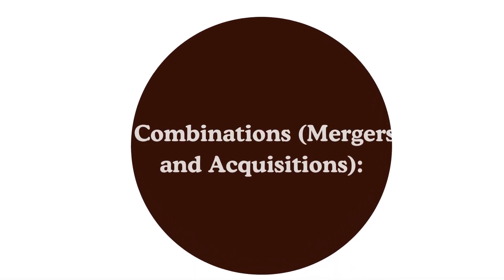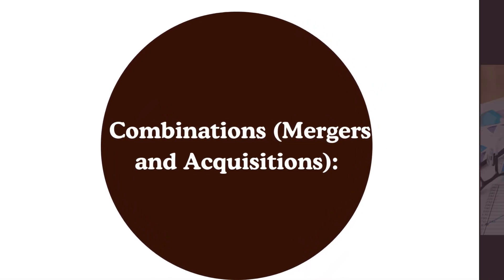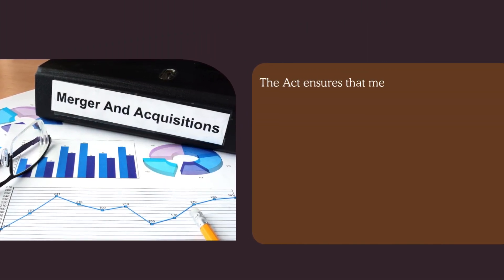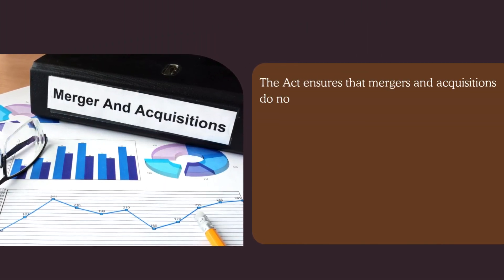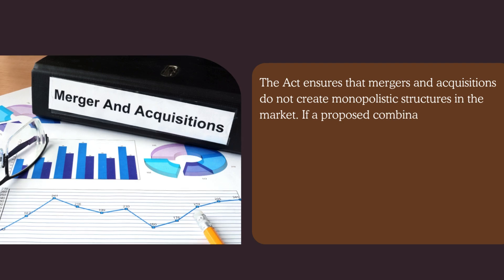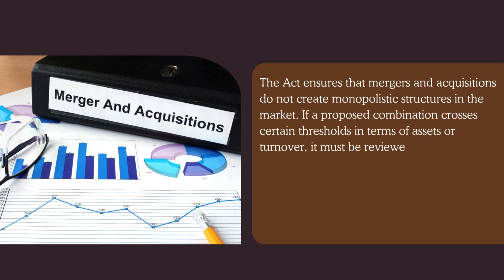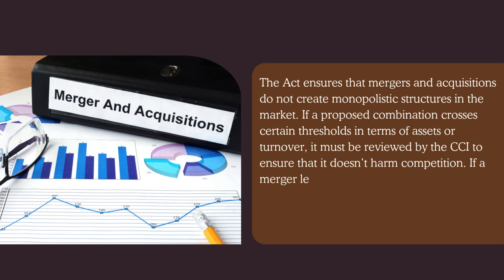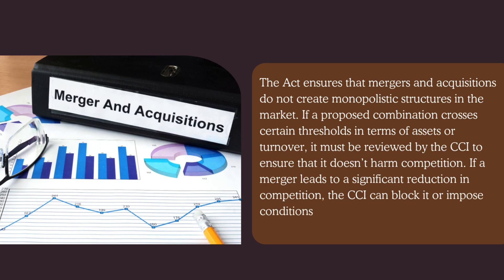Number three, combinations — mergers and acquisitions. The Act ensures that mergers and acquisitions do not create monopolistic structures in the market. If a proposed combination crosses certain thresholds in terms of assets or turnover, it must be reviewed by the CCI to ensure that it doesn't harm competition. If a merger leads to a significant reduction in competition, the CCI can block it or impose conditions to preserve competitive market dynamics.